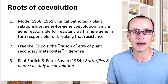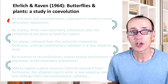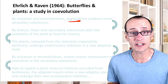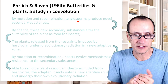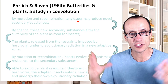Here's what Ehrlich and Raven actually proposed. They said that either by mutation or recombination — just by some chance event or by mixing up traits or genes — angiosperms, that is flowering plants, could produce some new plant substance, a secondary compound. These are compounds not serving a primary physiological role, but serving additional roles such as mediating interactions with other organisms.